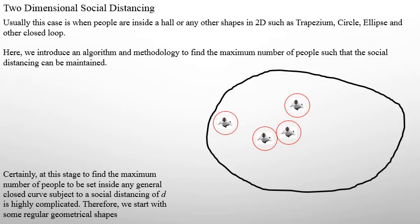The next case, which is more interesting, is if we assume two-dimensional social distancing. Two-dimensional social distancing means how we can distribute the maximum number of people within a closed place — a home, a cinema, or a classroom and so on. Because the aim of this video is mathematics, we may assume this is a general closed loop or curve. But dealing with it in a general way, the problem is highly complicated, so I will take some simple examples.